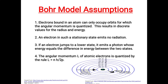The third model is the Bohr atomic model. Its first assumption is: electrons bound in an atom can only occupy orbits for which the angular momentum is quantized, resulting in discrete values for the radius and energy. Each electron is in its specific orbit around the nucleus, and its angular momentum and energy in that orbit are quantized — fixed in packet form.